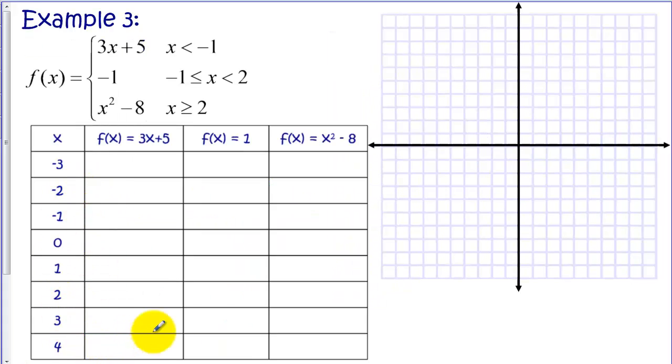And now let's look at our last example, which is a bit more complicated. Now I've already filled in some values in the table. Again, I've put -1 in the table, a boundary, 2 is a boundary. So those are in there and some points in between.